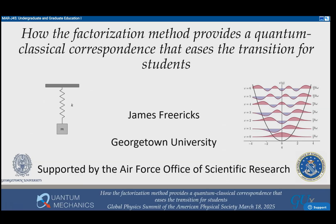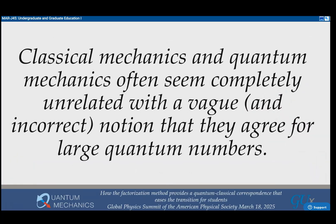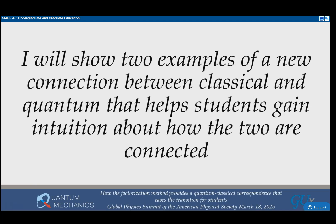I'm going to show you a different way that you can proceed. Classical mechanics and quantum mechanics often seem completely unrelated with a vague and incorrect notion that they agree for large quantum numbers. I'm going to show you two examples of a new connection between classical and quantum that helps students gain intuition about how the two are connected.